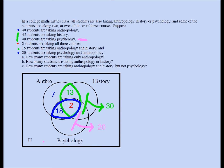One more thing: the very first line states that all students are taking anthropology, history, or psychology. That tells us nobody is taking none of the three, so I'm going to put zero in the outside region. Now I have my Venn diagram — it looks a little crude, but that's all I can glean from the given information.